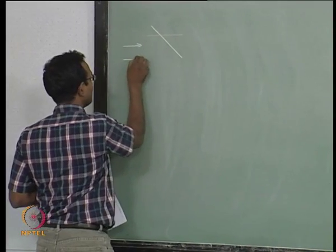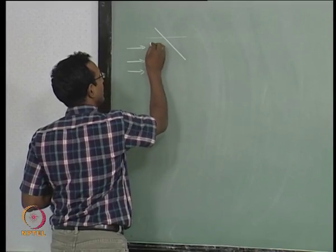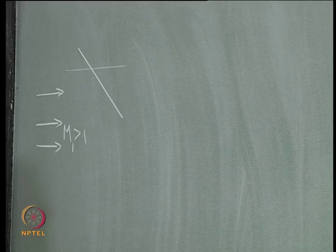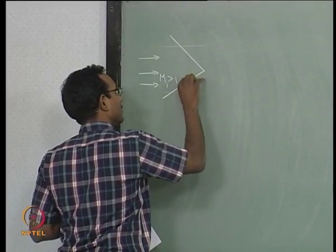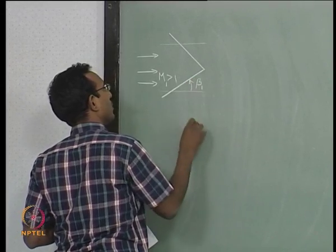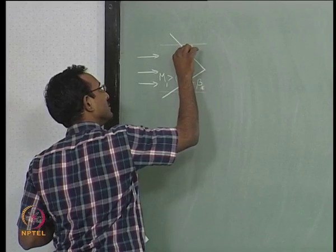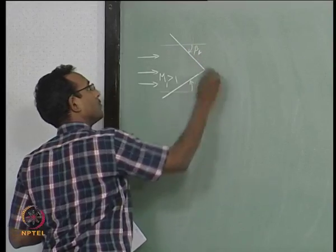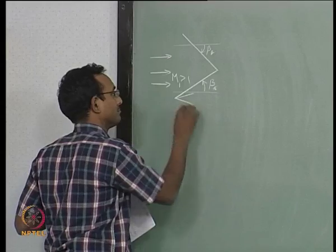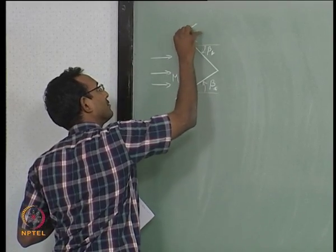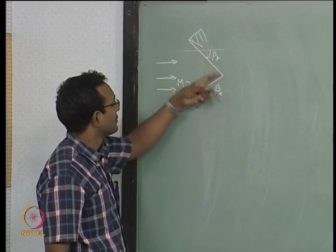Say in some flow field where flow is like this and Mach number is supersonic — I will call it M1, greater than 1 — and there is one oblique shock with angle beta A and another oblique shock with some other angle, beta B. I have two oblique shocks coming from some model here, say a wedge and another wedge with a higher angle.